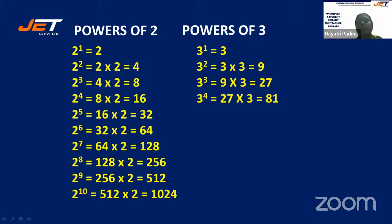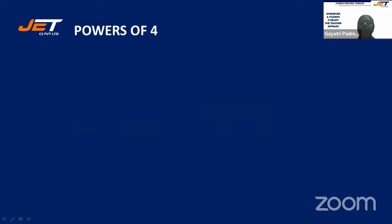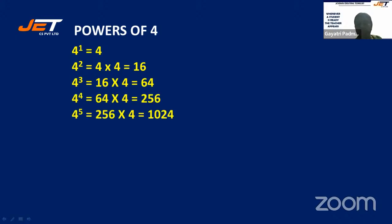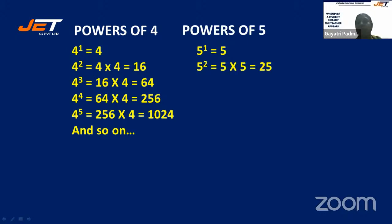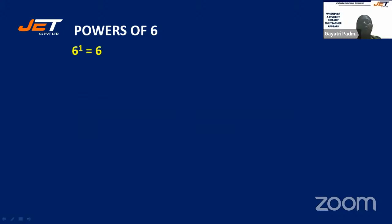Next, powers of 3: 3 power 1 is 3, 3 power 2 is 9, 3 power 3 is 27, 3 power 4 is 81, 3 power 5 is 243. Powers of 4: 4 power 1 is 4, 4 power 2 is 16, 4 power 3 is 64, 4 power 4 is 256. Powers of 5: 5 power 1 is 5, 5 square is 25, 5 cube is 125, 5 power 4 is 625, 5 power 5 is 3125.